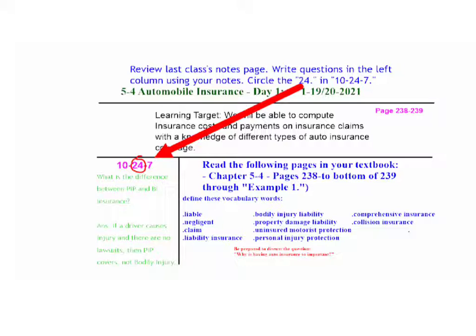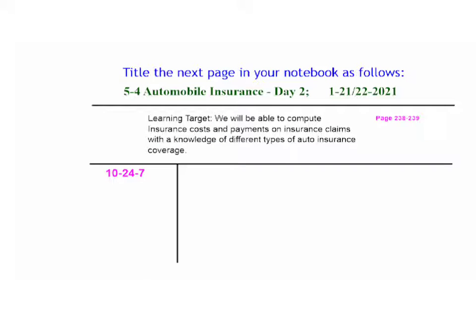Let's take a look at our last notes page from Day One for automobile insurance and write a question in our left-hand column. An example question is: what's the difference between PIP and BI insurance? The answer is if a driver causes injury and there are no lawsuits, then PIP covers — if not, bodily injury does. Title our next page: 5-4 Automobile Insurance Day Two. Our learning target is the same as earlier this week: we will be able to compute insurance costs and payments on insurance claims. Please put a 10-24-7 in your left-hand column. Stop the video until you get this completed, then hit play.